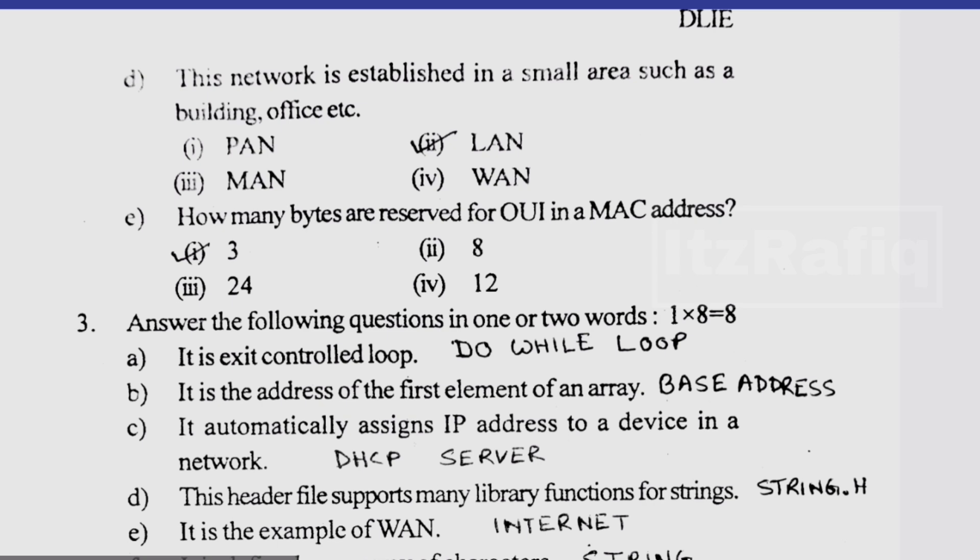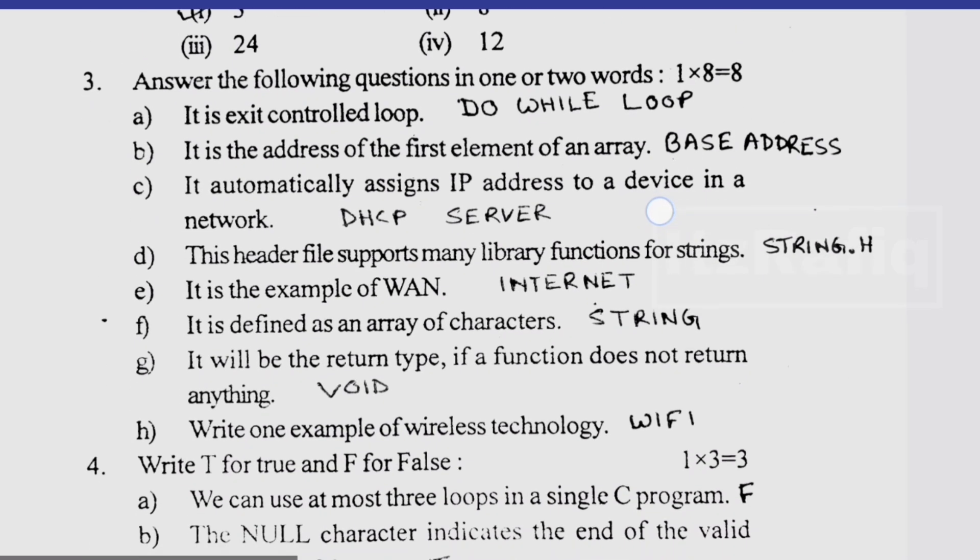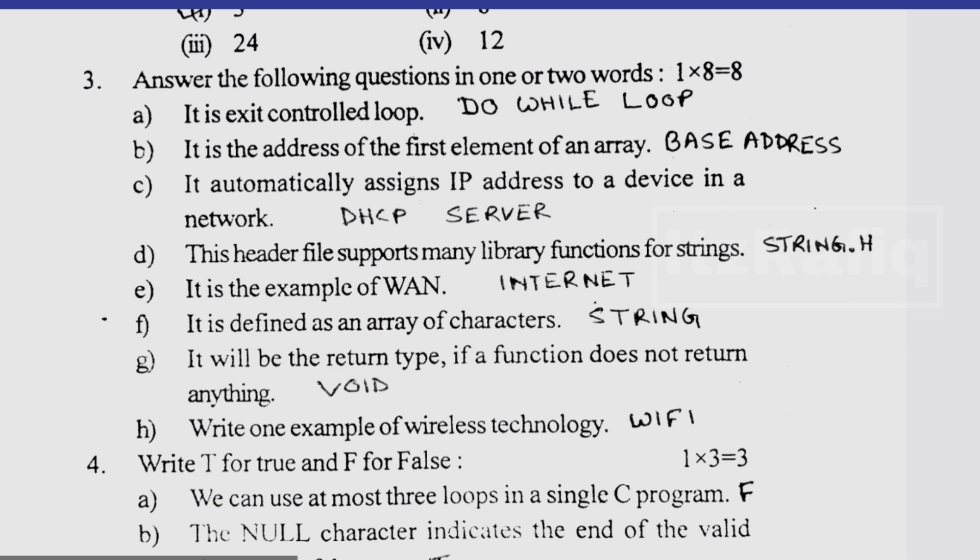Then answer in one word: it is an exit control loop, do-while loop. It is the address of the first element, it is base address or base name of the array. It automatically assigns IP address, it is DHCP server. The header file supports many library functions, string.h.